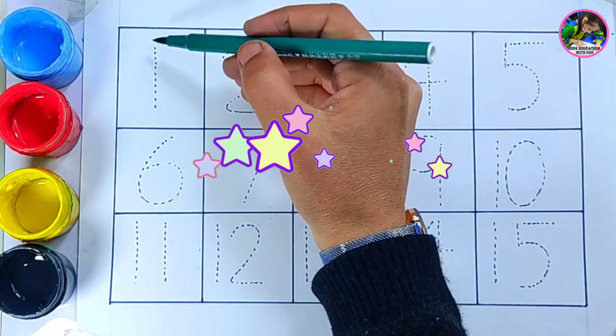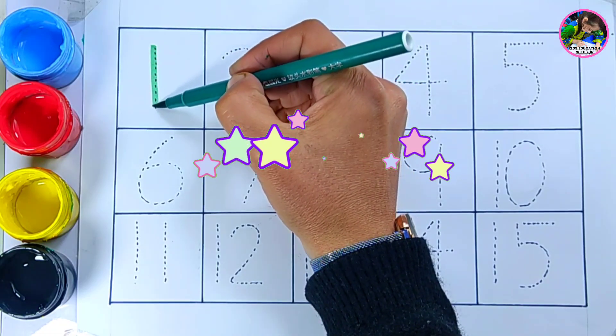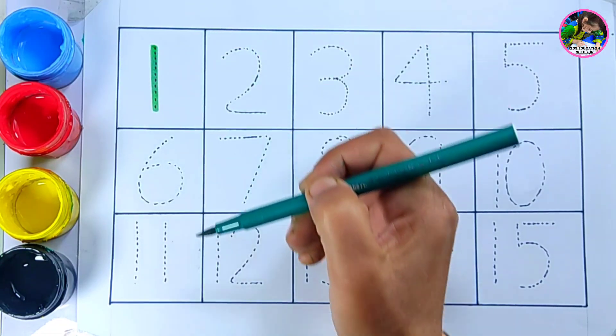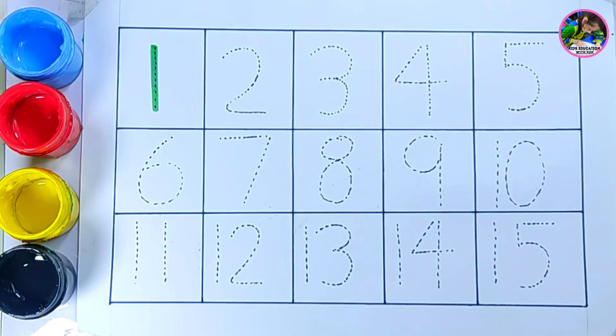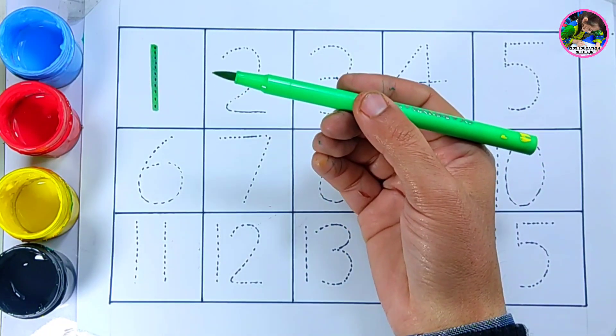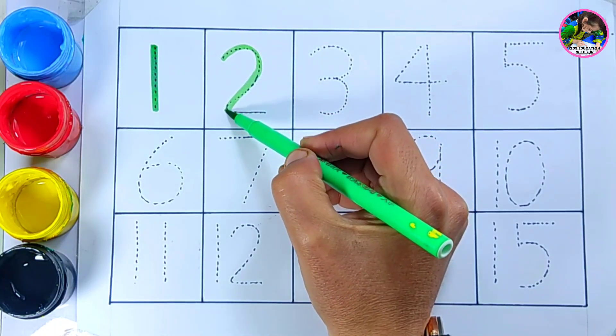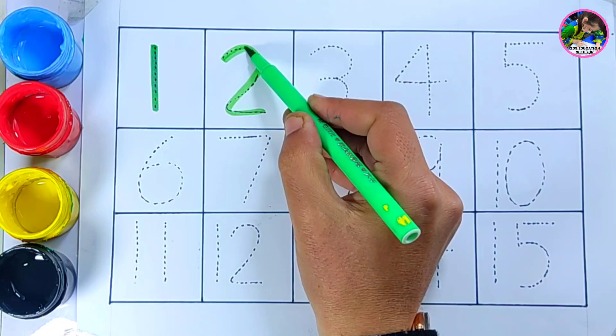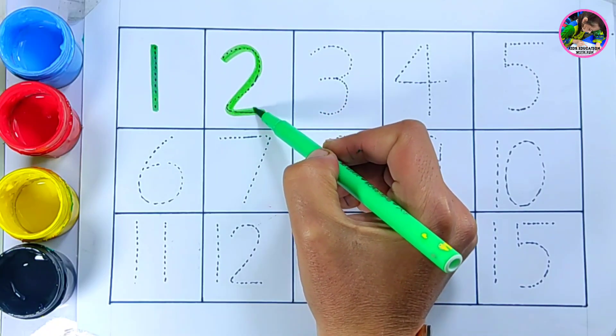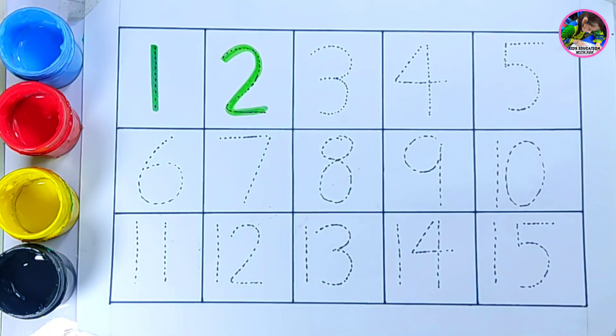Dark green color, this is dark green color. Number one. Light green color, number two.